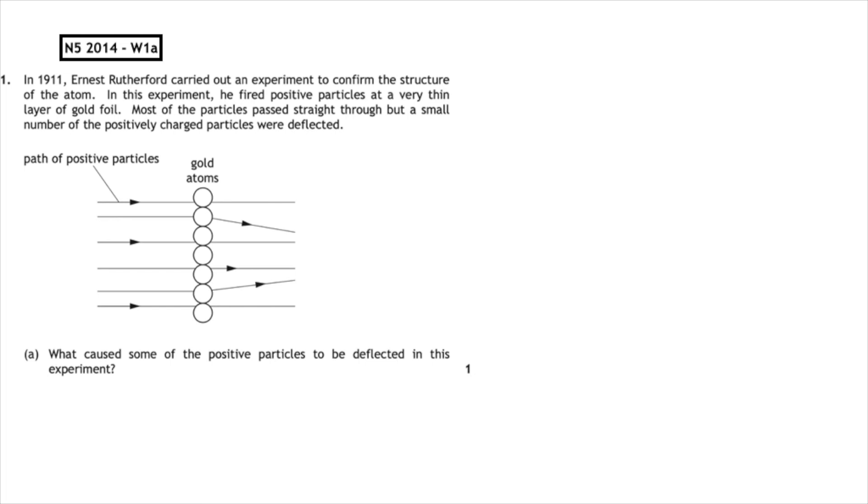This past paper question is from the National 5, 2014, written 1A. In 1911, Ernest Rutherford carried out an experiment to confirm the structure of the atom. In this experiment, he fired positive particles at a very thin layer of gold foil. Most of the particles passed straight through, but a small number of the positively charged particles were deflected. What caused some of the particles which were positive to be deflected in this experiment?